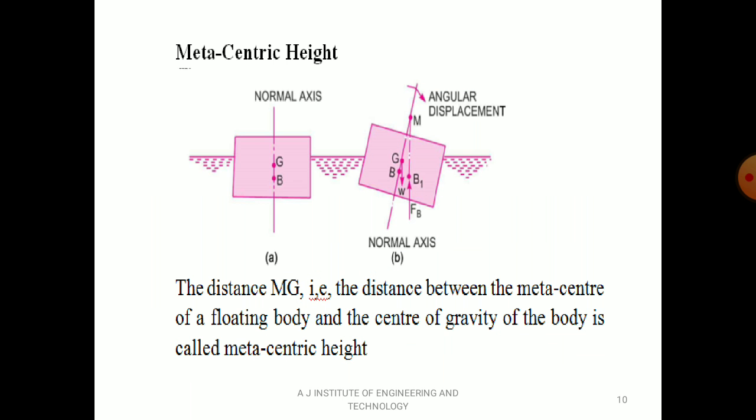Now metacentric height. Using the same diagram — the distance MG, from metacenter to center of gravity along the normal axis, is called metacentric height, or simply GM. M is the metacenter of the floating body and G is the center of gravity or centroid of the body. The distance between them is called metacentric height.